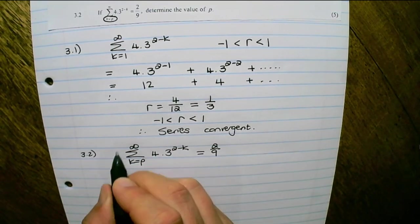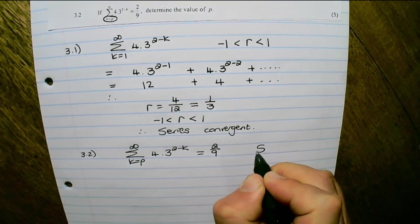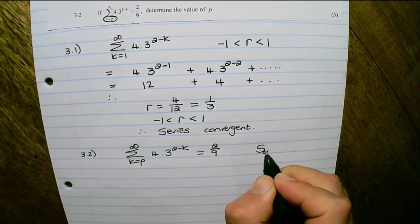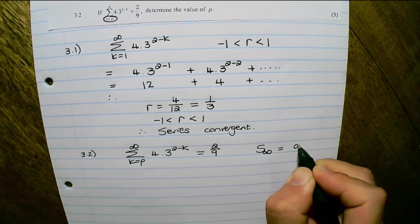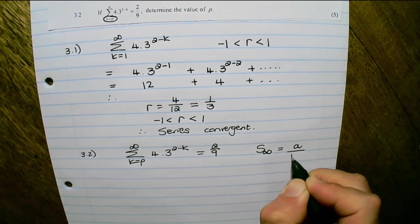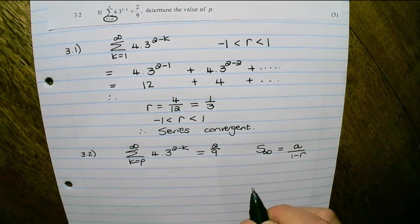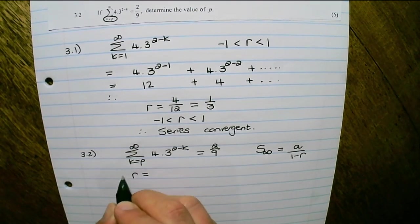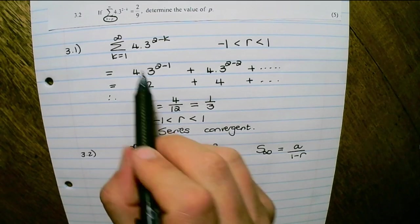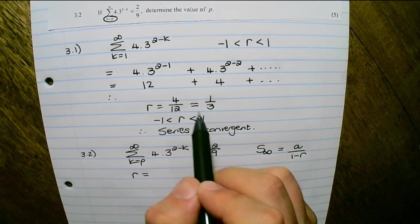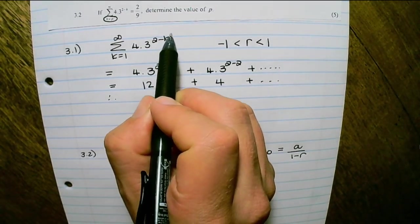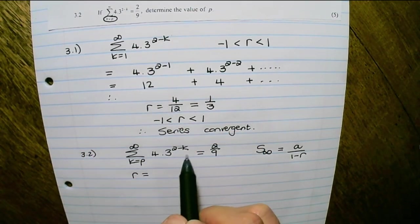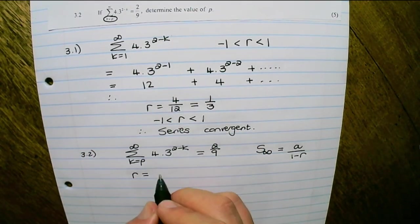Now sigma represents the sum, and sigma to infinity represents the sum to infinity. And on the formula sheet, this is a over 1 minus r. The r value we have already calculated in the previous question, which is 1 third. Can you see that this contents is the same in both equations? And that ratio would be the same.